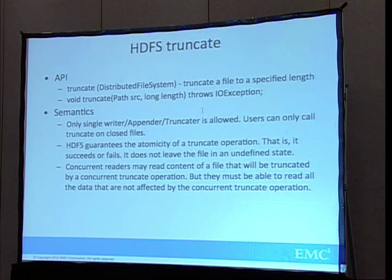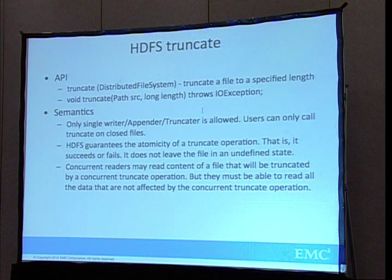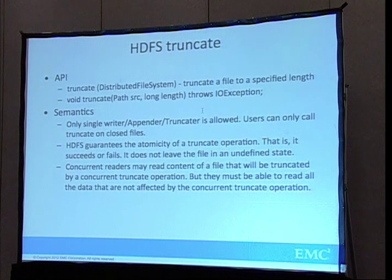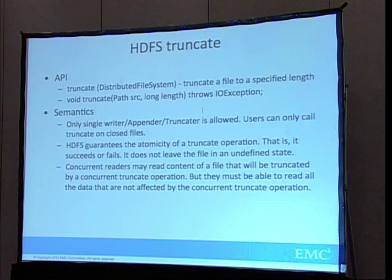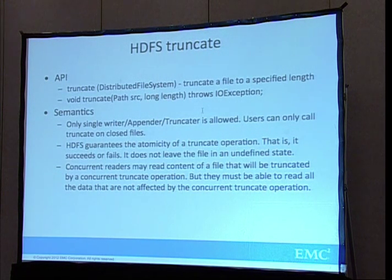Next I'll introduce how we support HDFS Truncate. The Truncate API has two arguments: the file path and the target length. HDFS currently only supports one single writer and one single appender, so for Truncate we keep this constraint and only support one Truncate operation at a time. We also require that users can only truncate closed files to avoid unnecessary complexity.